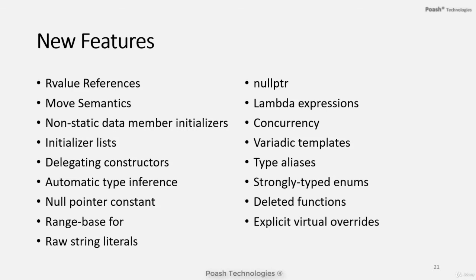Afterwards we will discuss generic programming using templates and we will also see the different components of the standard template library. We will also discuss modern C++ features such as move semantics, perfect forwarding, lambda expressions, new containers, initializer lists, new class keywords, automatic type inference, concurrency, etc. There are too many to list here. Please look at the curriculum for a complete list of topics.